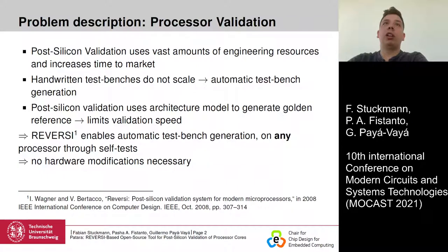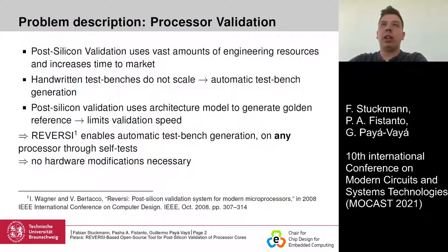Pre-silicon validation uses vast amounts of engineering resources and increases time to market. One aspect of validation is testing edge cases manually; however, this does not scale. Another aspect is that architectural models limit validation speed, especially if random data is used, because the generation of the golden reference is slow.